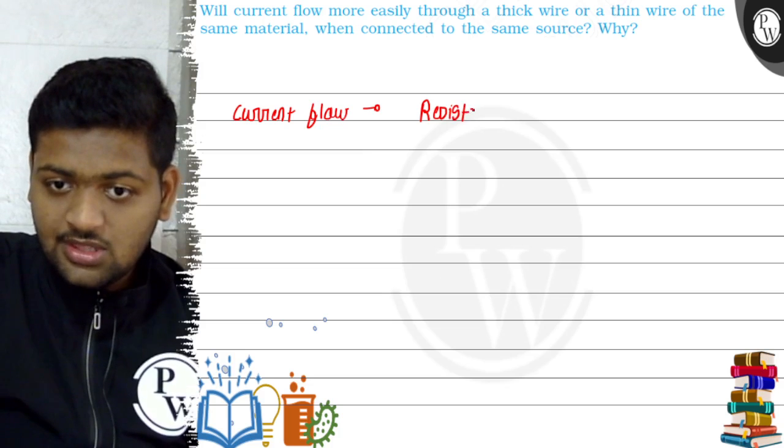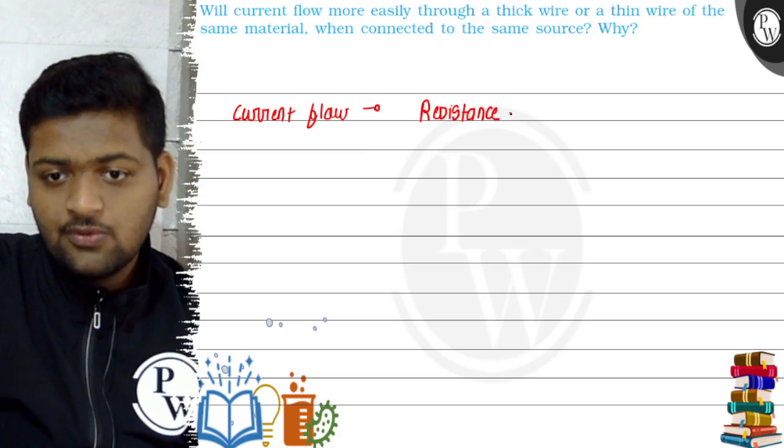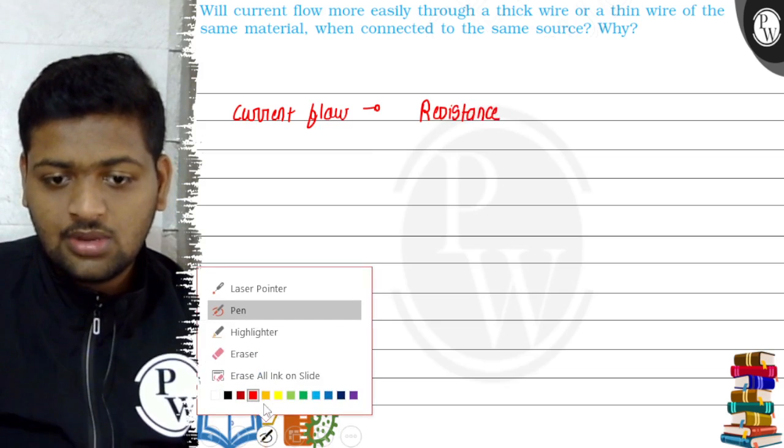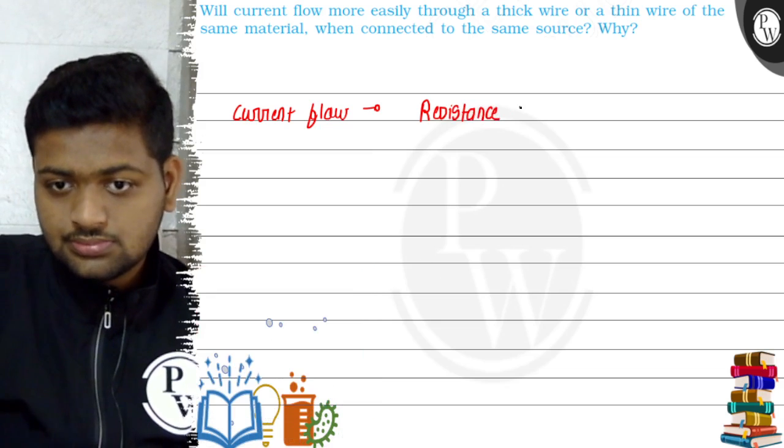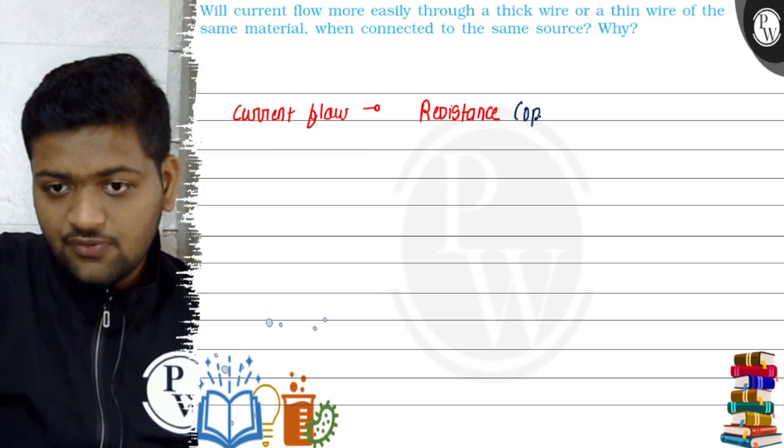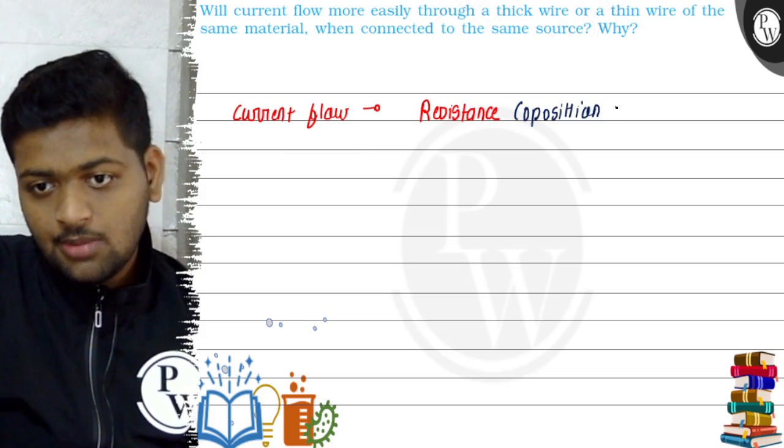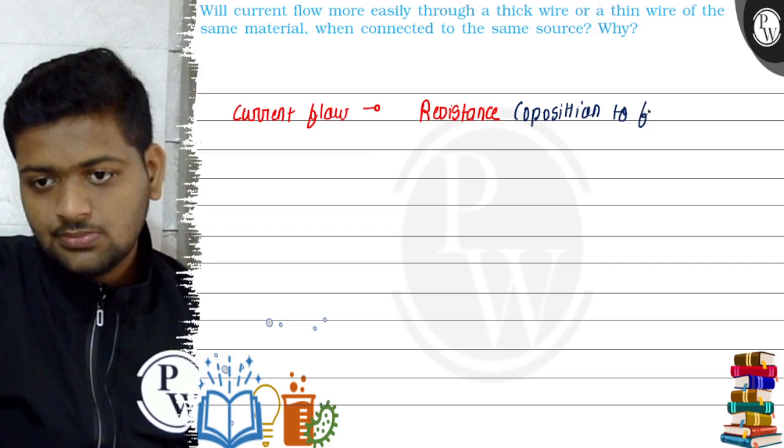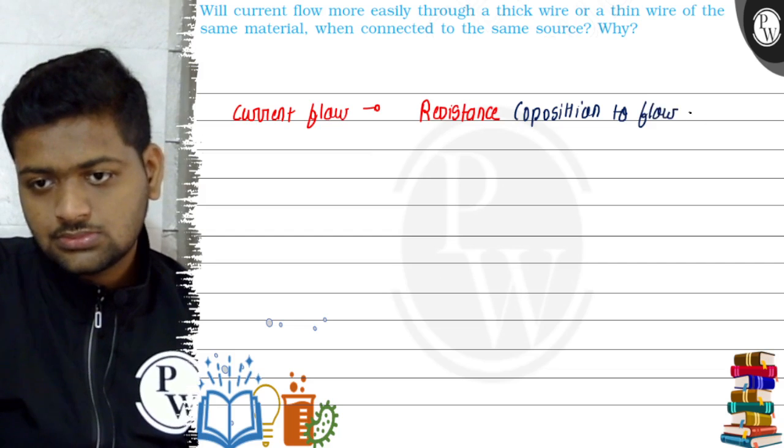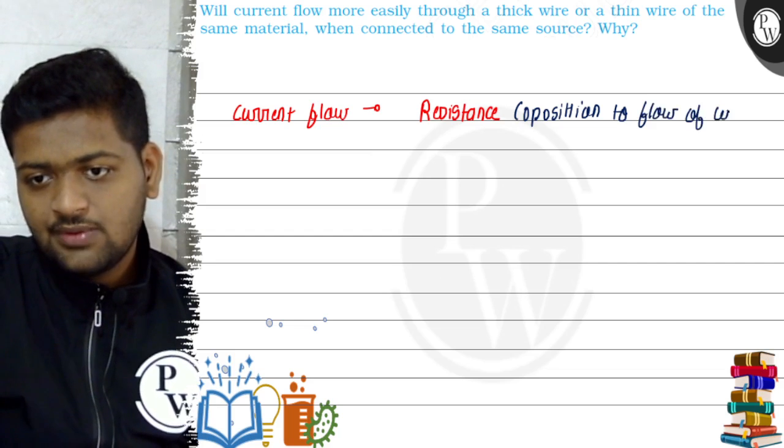Because the resistance is the deciding factor. How will the current flow? Because resistance is nothing but opposition to flow of current.